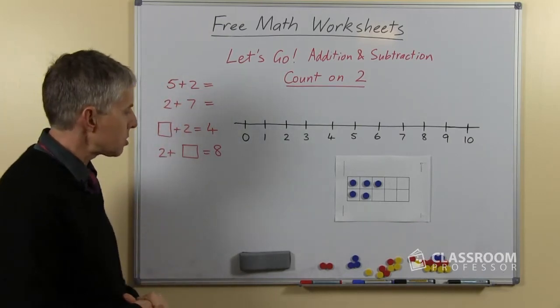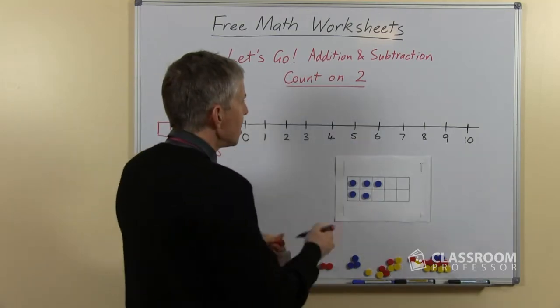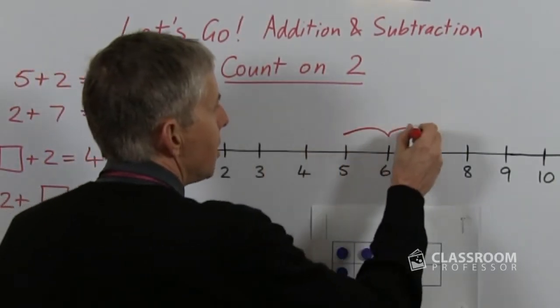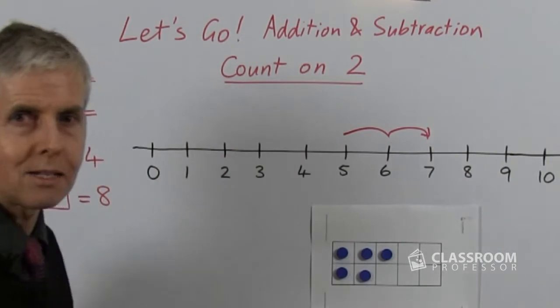So if we were adding 5 plus 2, quite simply with the number line we would start from the 5, make 2 more hops. What number do we get to?